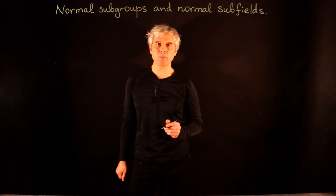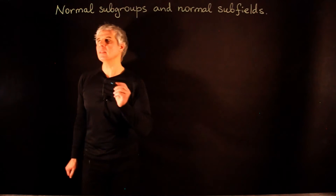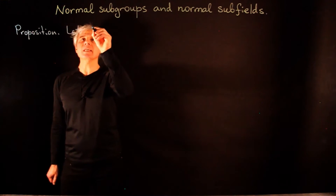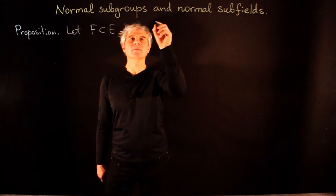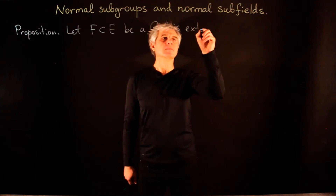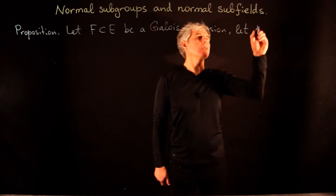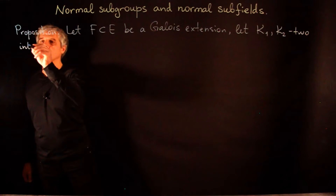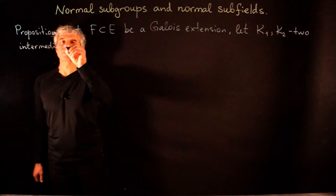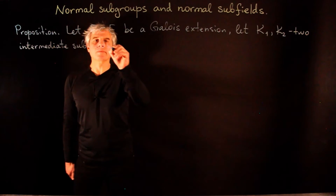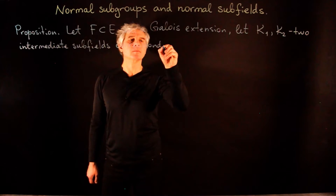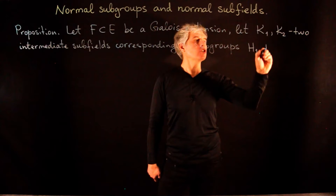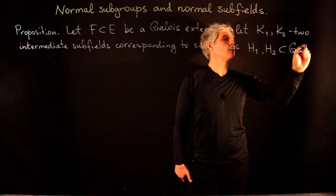In this lecture, we are going to discuss finer points of the Galois correspondence. We begin with the following proposition. Let E be a Galois extension and let k1 and k2 be two intermediate subfields, corresponding to subgroups H1 and H2 in the Galois group of E over F.